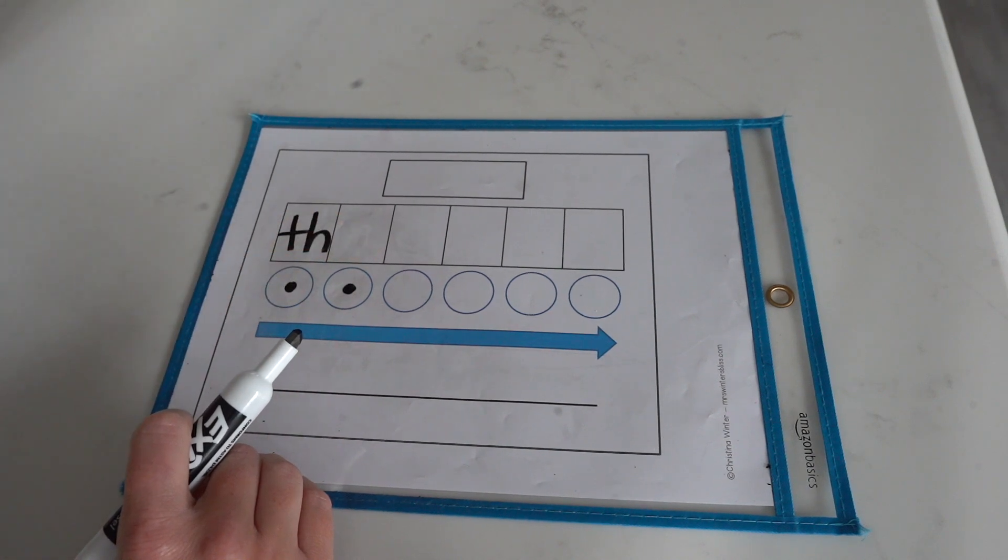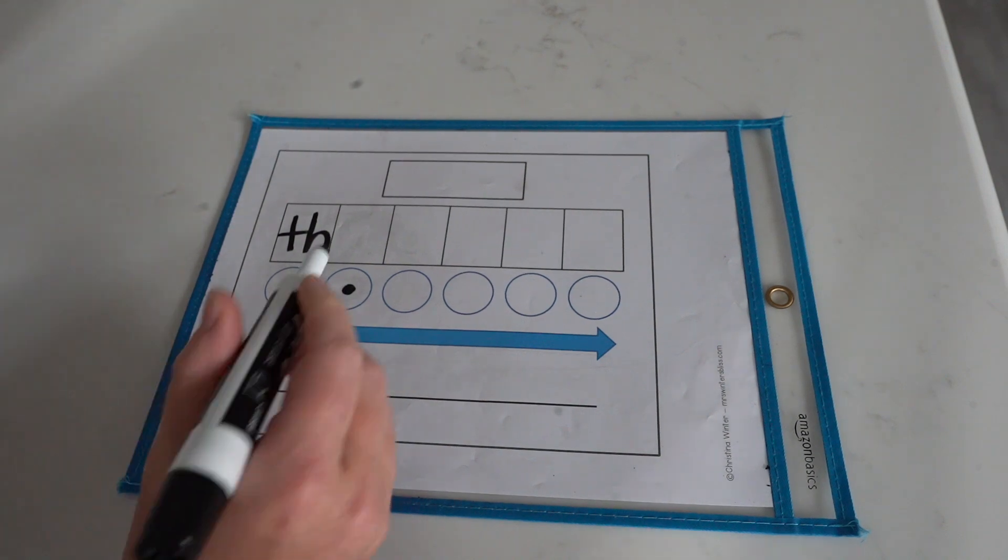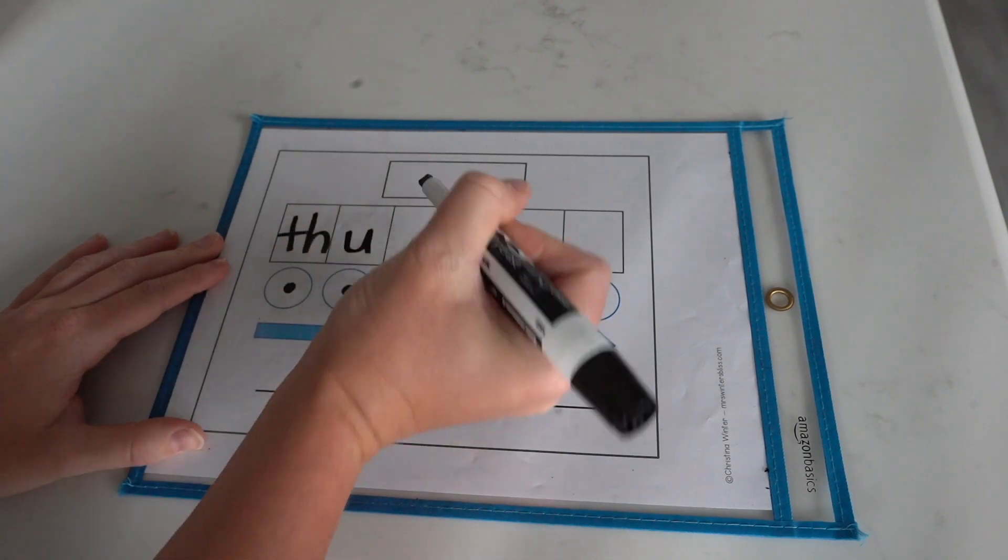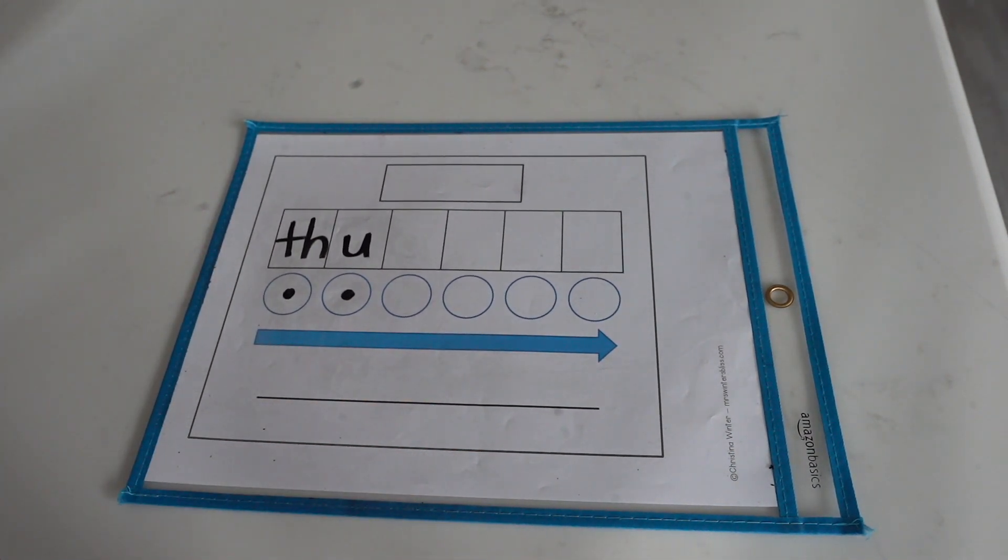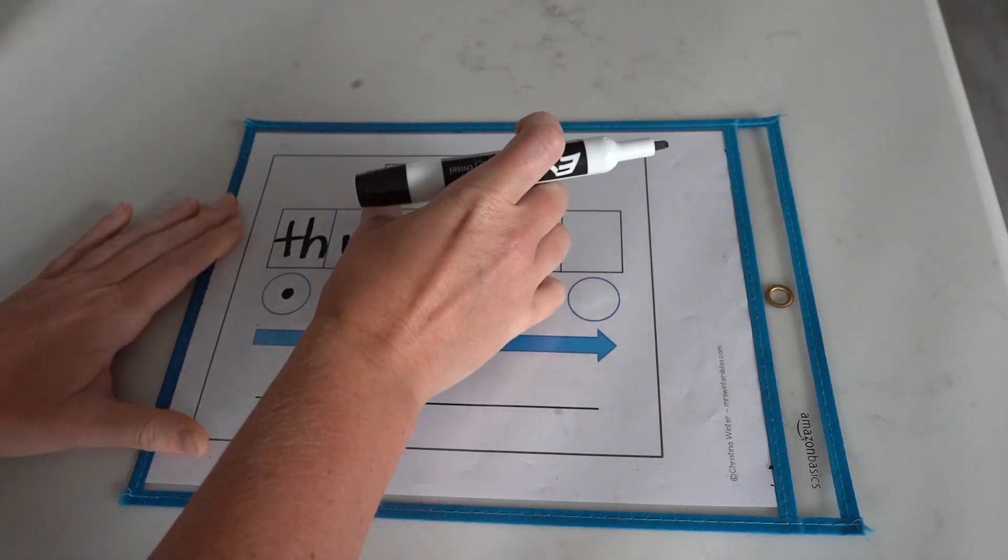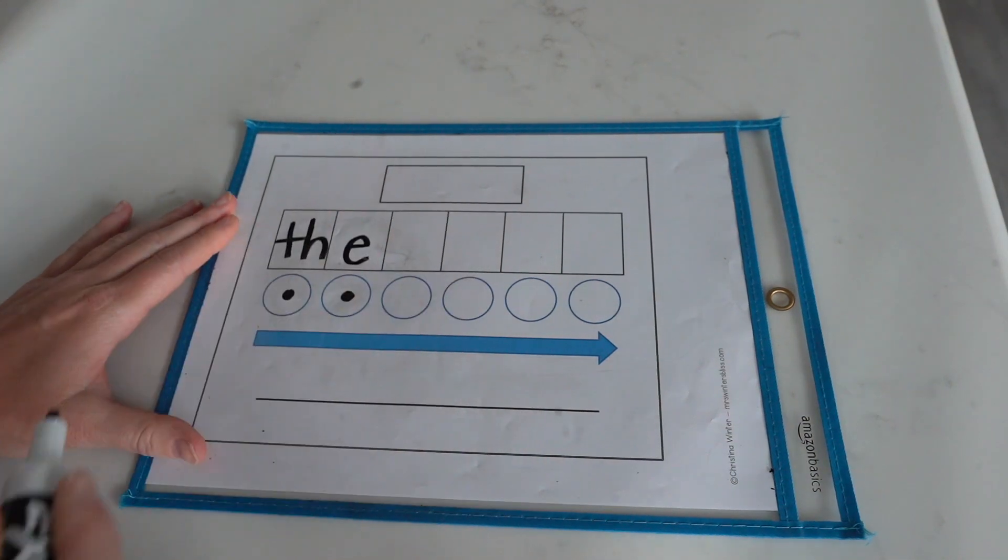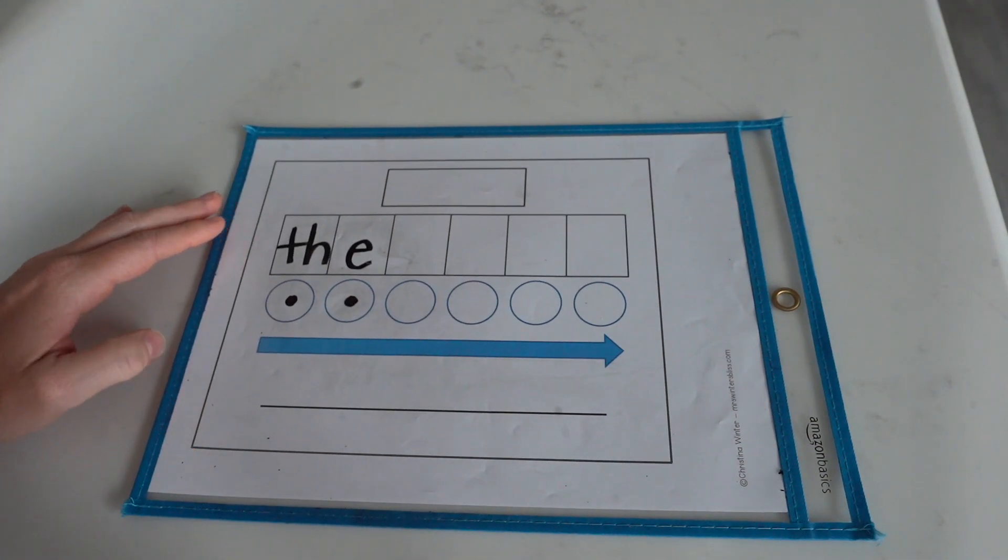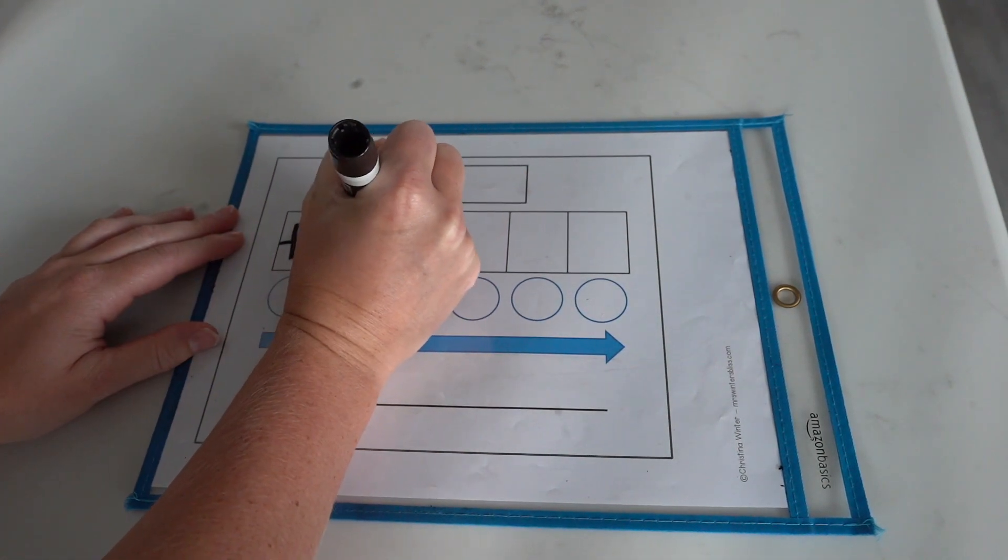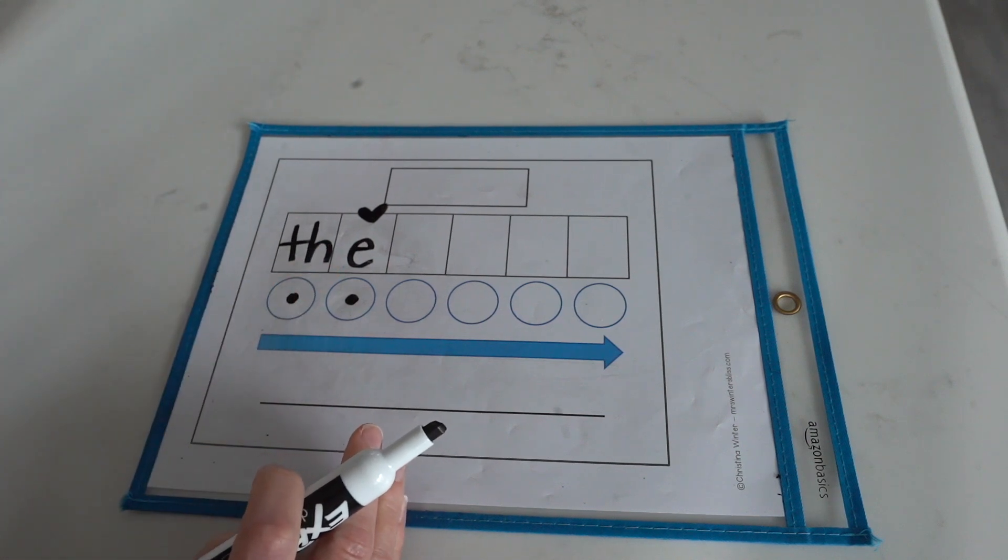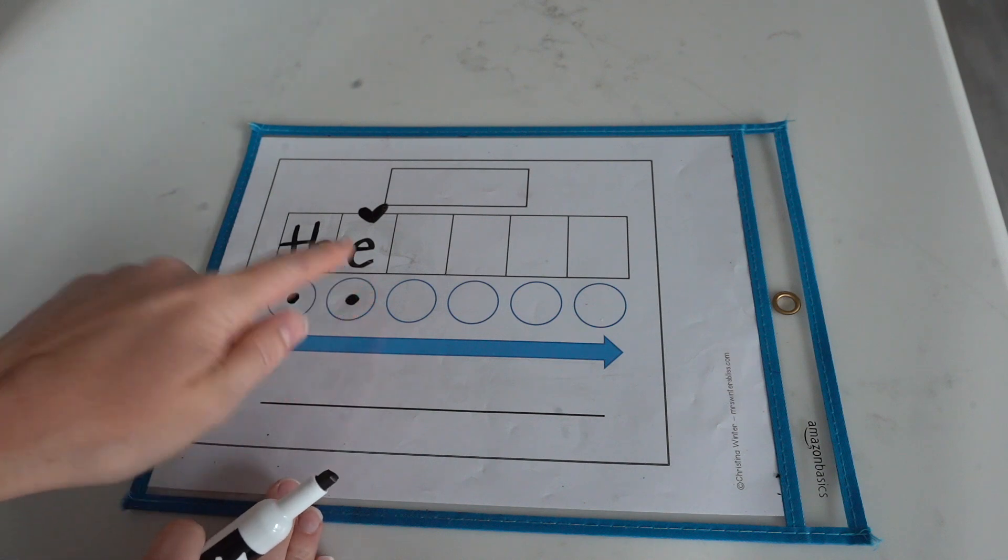Th, uh, what sound do we think of when we hear uh? Let's spell that sound. We usually use u, but in the word 'the', we are not going to use that letter. It is actually an e that is going to say uh. And guess what? We call this a heart part. We have to remember this part with our heart because it is irregularly spelled. This is the word 'the'.